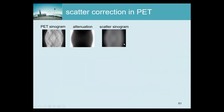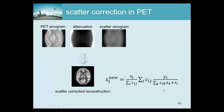Now we can start all over again, because recall this sinogram contains the scatter and our first activity image was wrong because of that. So we can do a better job now. We make an MLM reconstruction where we account for the scatter — that term goes into the forward projection: we take the image, forward project it, and add the scatter from the scatter sinogram. That should be identical to the measured sinogram. Now this image is going to be an underestimation, but it's going to be better than the previous one.